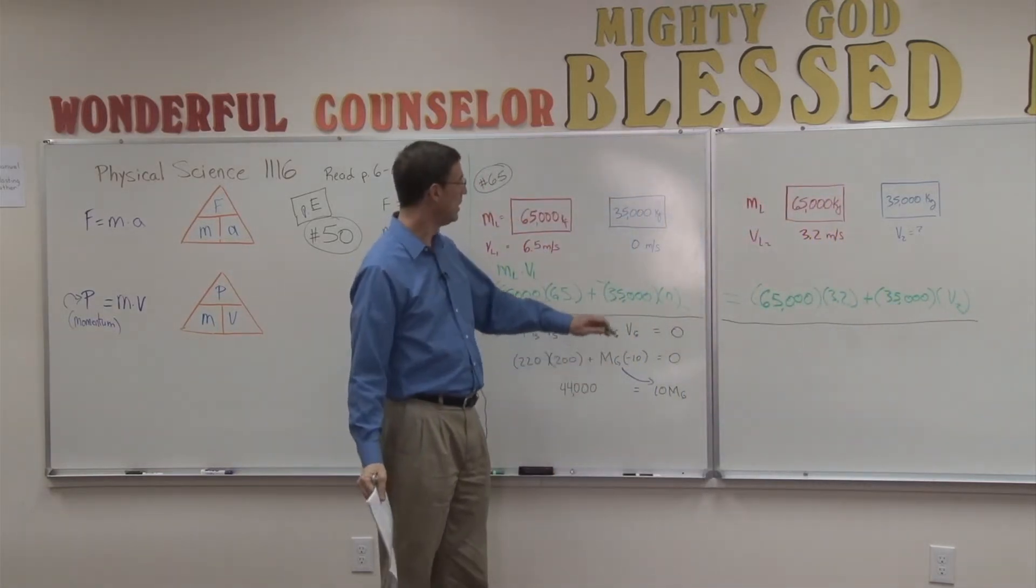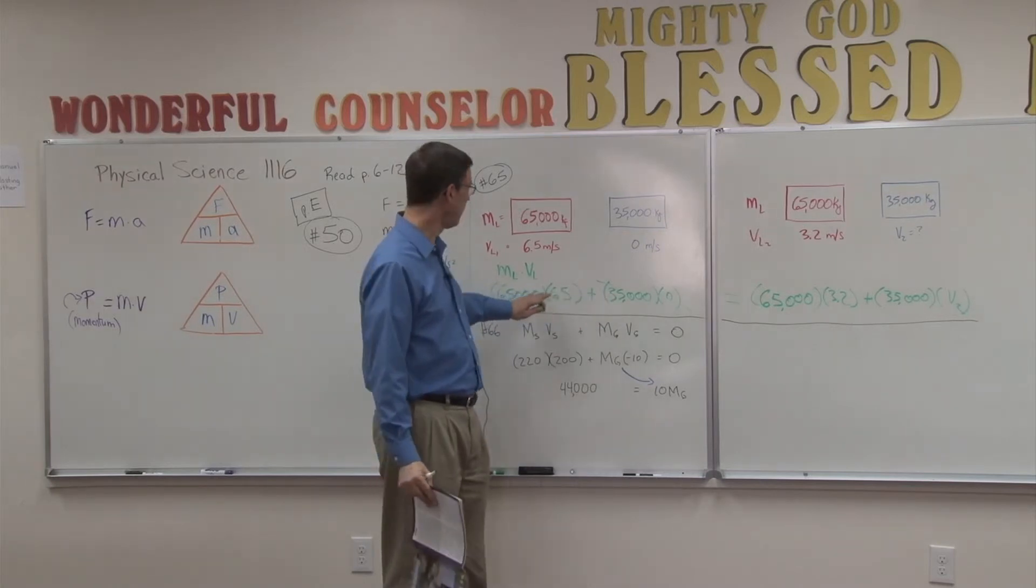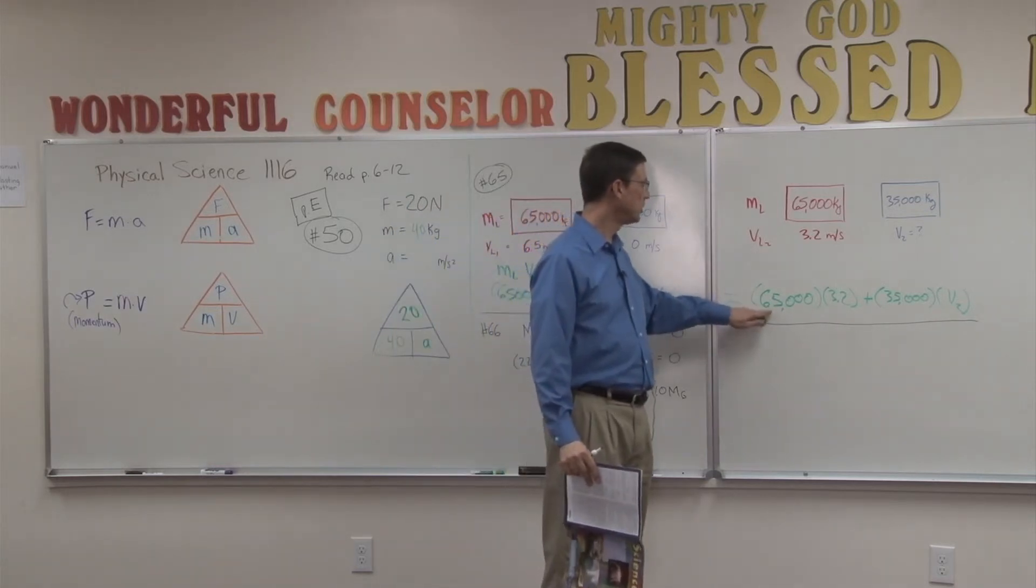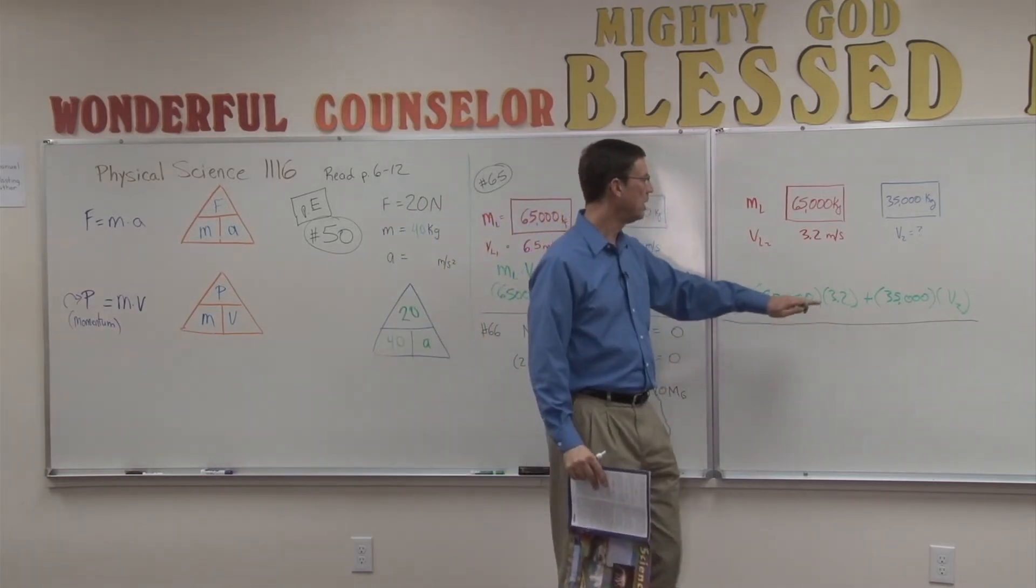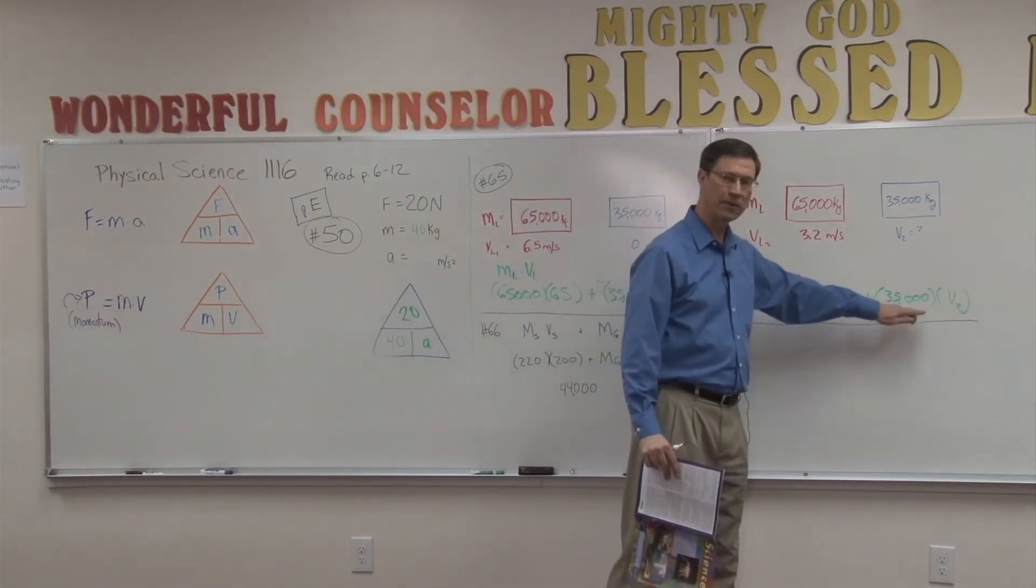I'm going to let you finish that. This is a very simple algebra problem. Use your calculator, multiply this number together, equals, multiply these two numbers together, plus 35,000 V2.